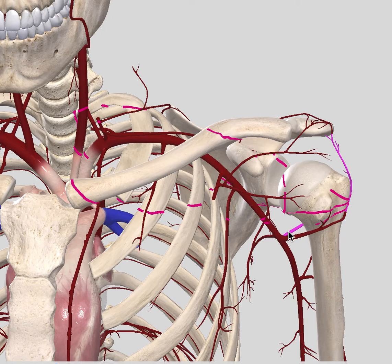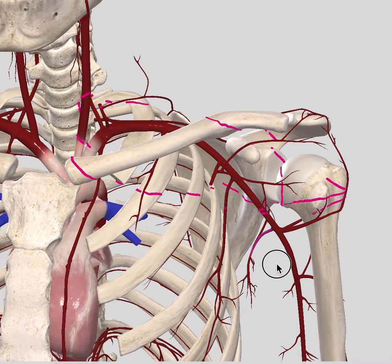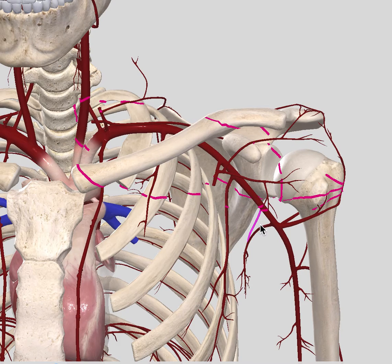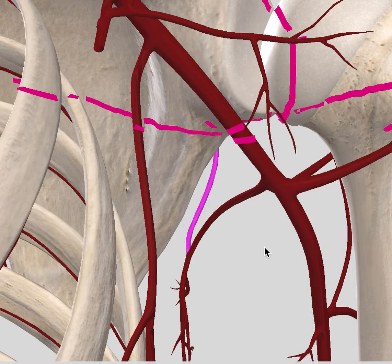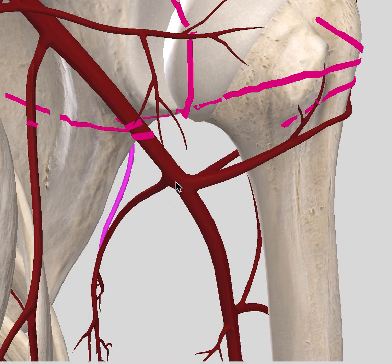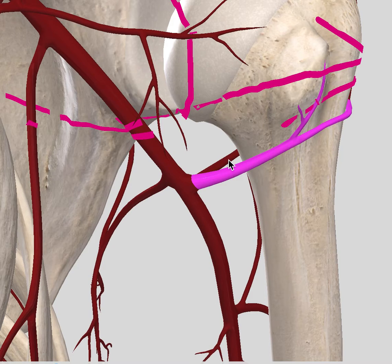Behind the anterior circumflex humeral artery we have the posterior circumflex humeral artery. Then we have the subscapular artery, going towards the bottom of the scapula, and the circumflex scapular artery. The anterior circumflex humeral artery rotates around the humerus and supplies the shoulder — specifically the deltoid. The posterior circumflex humeral artery also supplies the deltoid, teres major, teres minor, long and lateral heads of the triceps brachii, and the glenohumeral joint.